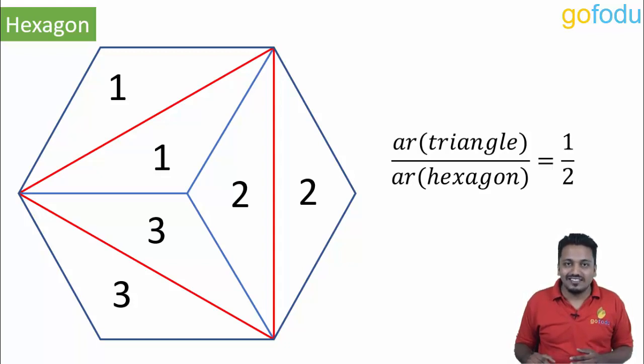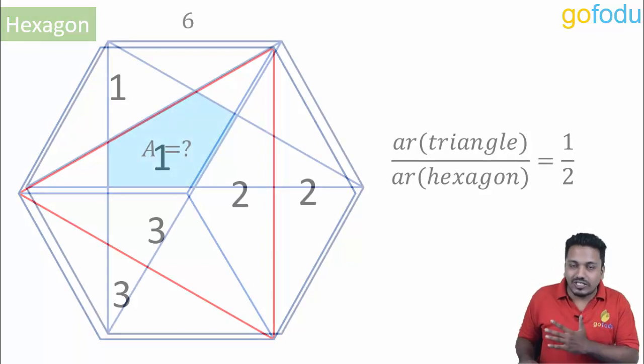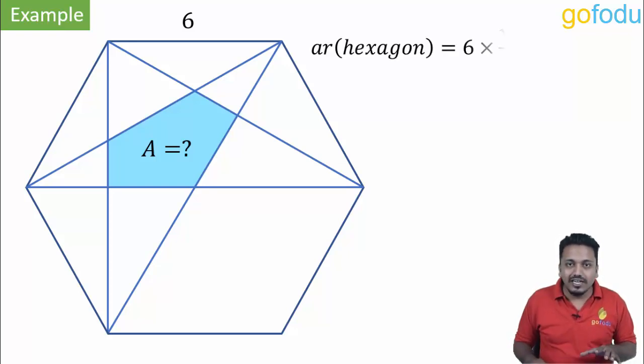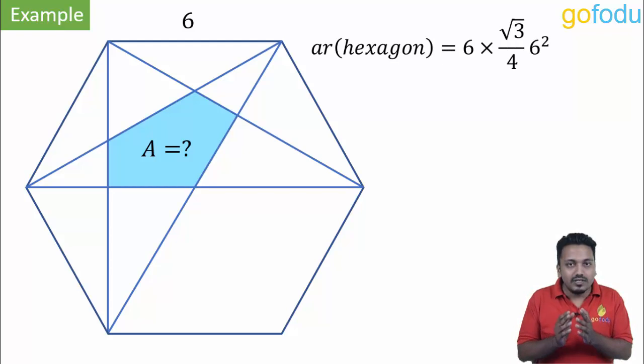We are almost done for this video. Just solve this last question and we will wrap up. Side is given. Area of hexagon will be six times the area of equilateral triangle, six into root three by four, six square, that is fifty-four root three.